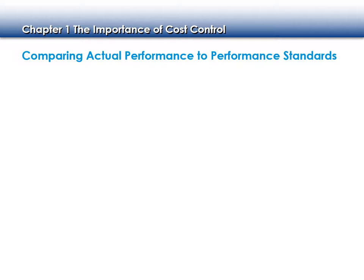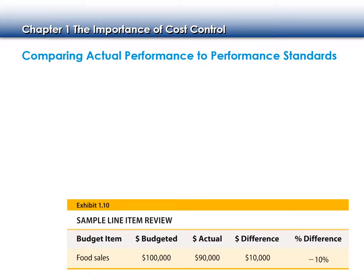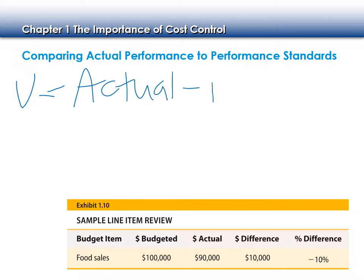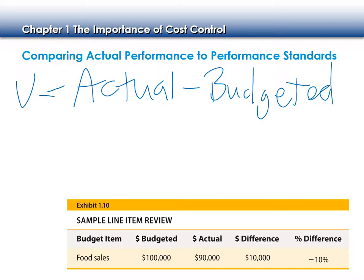We want to compare our actual performance to our standards — this is called a variance. Variance equals actual minus budgeted. That is what our variance is — variance is just a fancy word for difference. Just like our sales formula and profit-loss formula, the actual has to go first. If we have a negative number, that means we did not meet our budget.